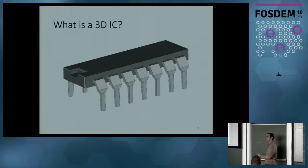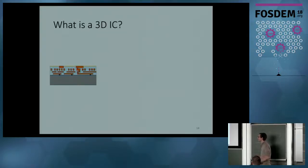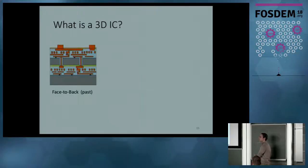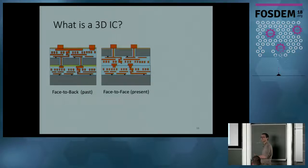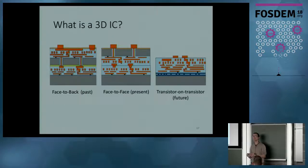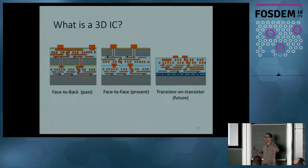So now, what is a 3D IC? How do we go from a 2D to a 3D IC? The most straightforward way is simply to stack two layers of ICs and you have a 3D IC. You can make it better, though — instead of face-to-back, where the substrate faces the metal layers, you could have the two metal layers facing each other directly, so that the interconnection between the two layers is smaller. You can go even further by having two layers of transistors and two layers of gates directly on top of each other with all the metal layers above them.